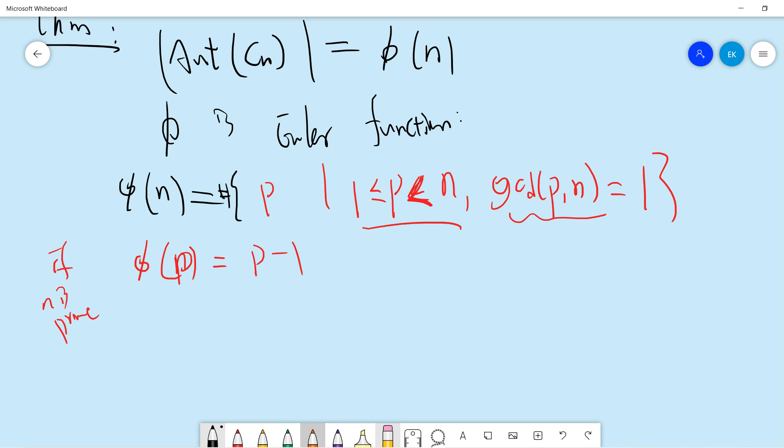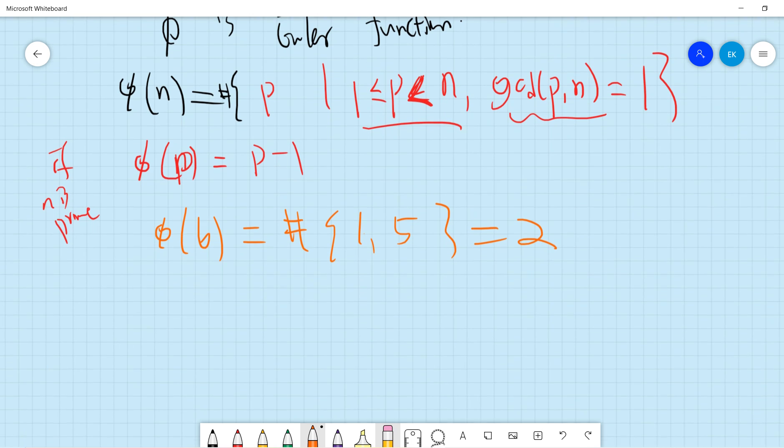Another simple example: phi(6) equals two, containing one and five, because two and three are not coprime to six.